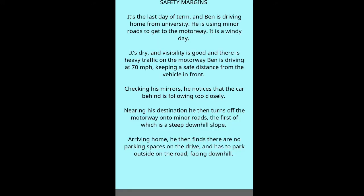Safety margins scenario: It's the last day of term and Ben is driving home from university using minor roads to get to the motorway. It's a windy day, dry with good visibility, and there is heavy traffic on the motorway. Ben drives at 70 mph keeping a safe distance from the vehicle in front. He notices the car behind is following too closely. Nearing his destination, he turns off the motorway onto minor roads, the first of which is a steep downhill slope. He then finds no parking on the drive and has to park facing downhill on the road.